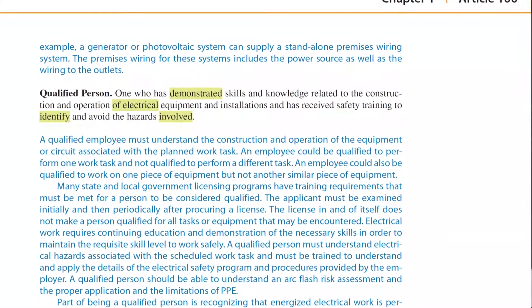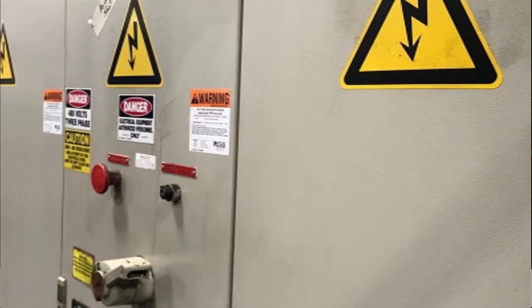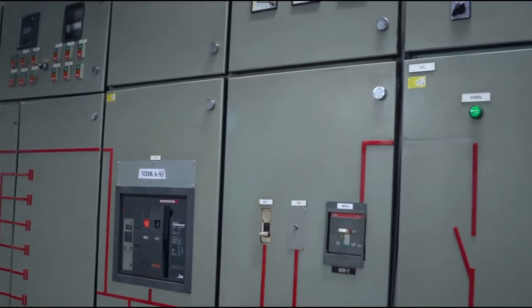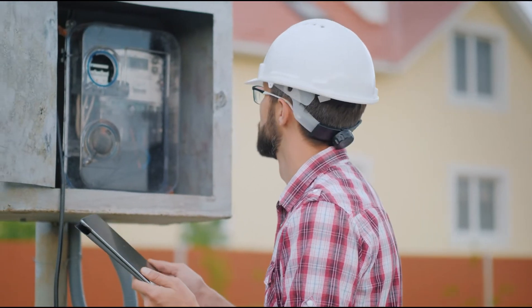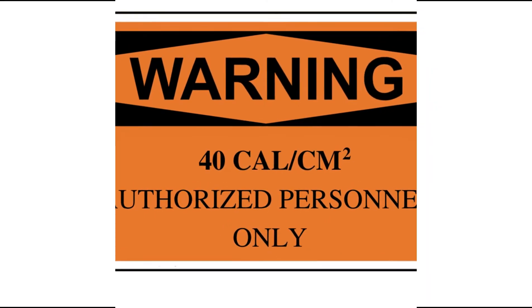A qualified person is defined in NFPA 70E, and part of that definition states the employee is one who has received safety training to identify and avoid the hazards involved. That understanding requires knowing what the different parts of an arc flash label are and what they mean. There are various parts of the arc flash label required by NFPA 70E Article 130.5, as well as specific equipment that must have the label. Equipment requiring labels includes switchboards, panelboards, industrial control panels, meter socket enclosures, and motor control centers in other than dwelling units. Basically, any panel likely to require examination, adjustment, servicing, or maintenance while energized requires a label. If equipment is not likely to be serviced while energized, the label is not required and should not have an arc flash label applied.